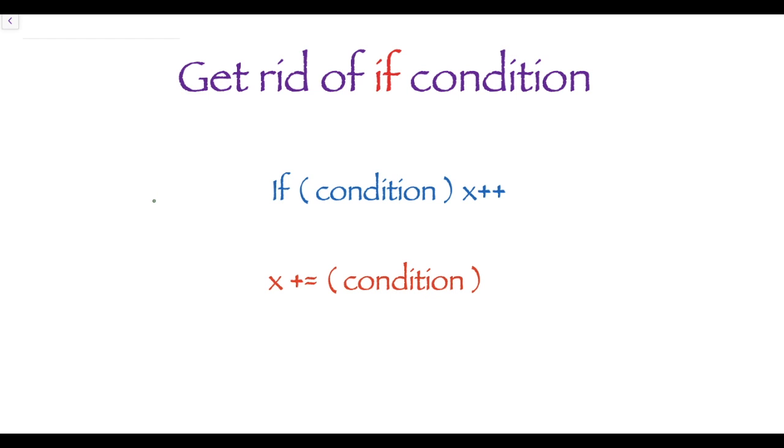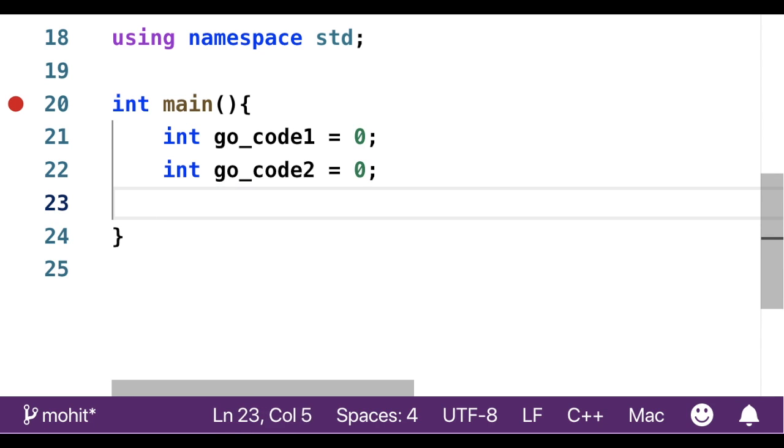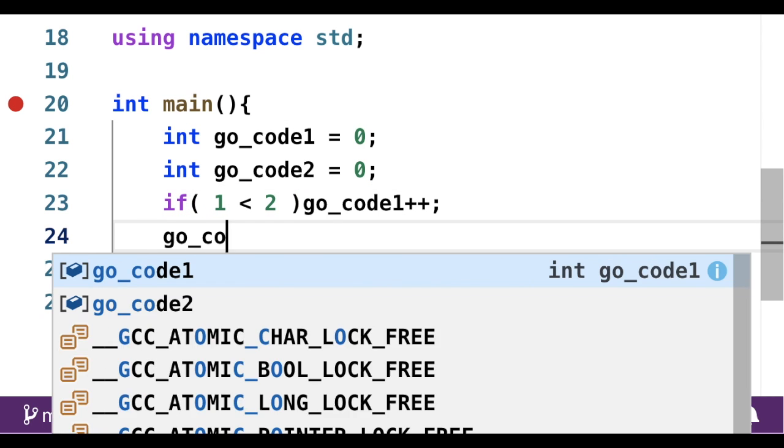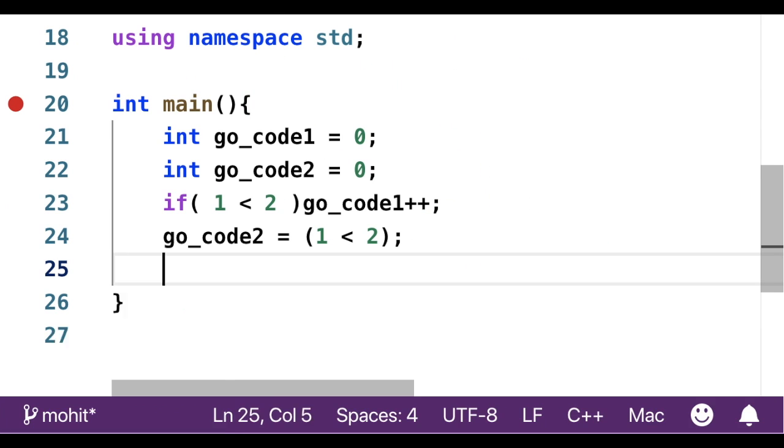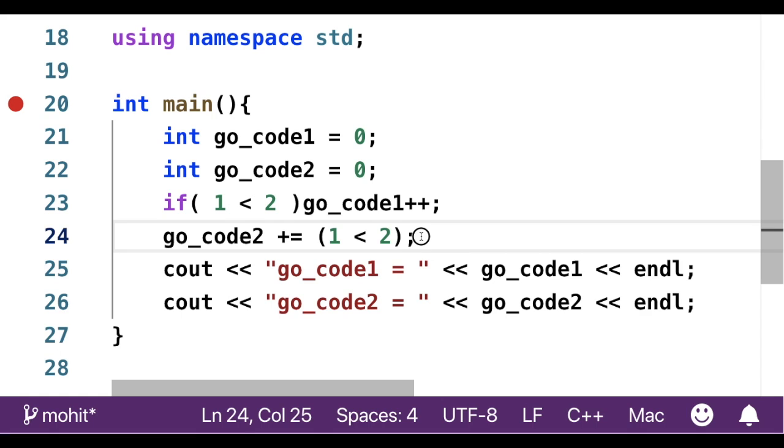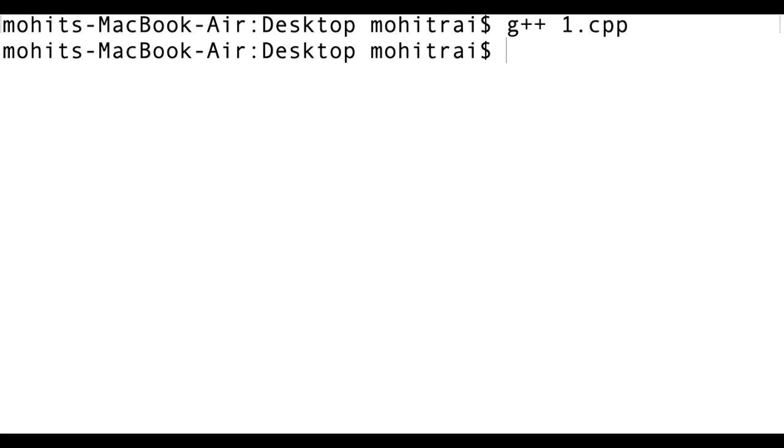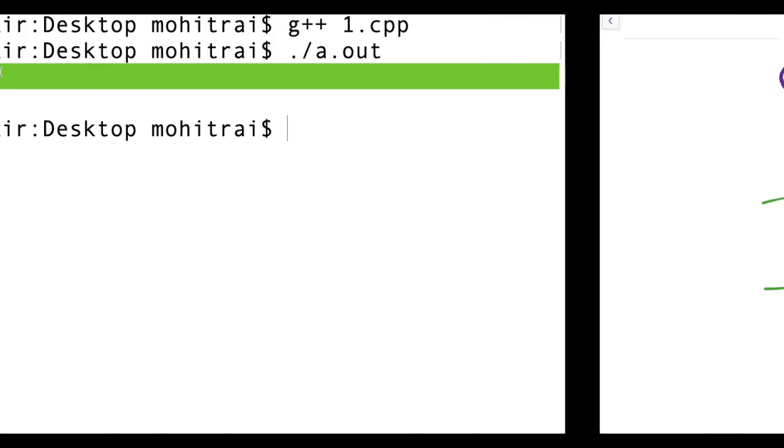Fourth is get rid of if condition. Instead of writing if condition then x++, we can also write x plus equals condition. Let's see whether this works or not. In this if condition, if 1 is less than 2, then gocode1 will increment by 1. In this condition also, if 1 is less than 2, then gocode2 will increase by 1. Let's see the output.